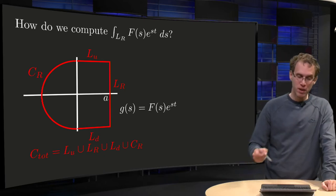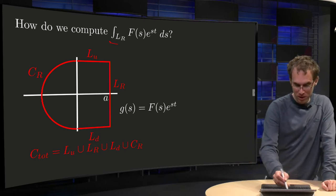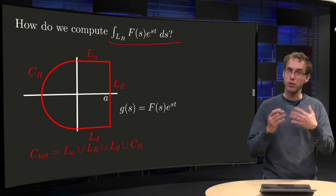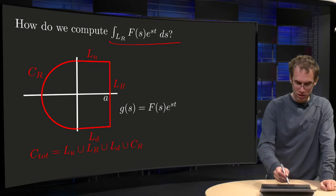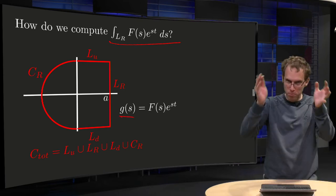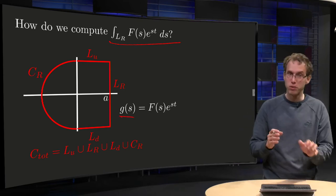So, what do we do? We want to compute an integral of the Bromwich line L_R of some function capital F(s) times e^(st), so let's call this complete function G(s), just to ease the notation a bit.